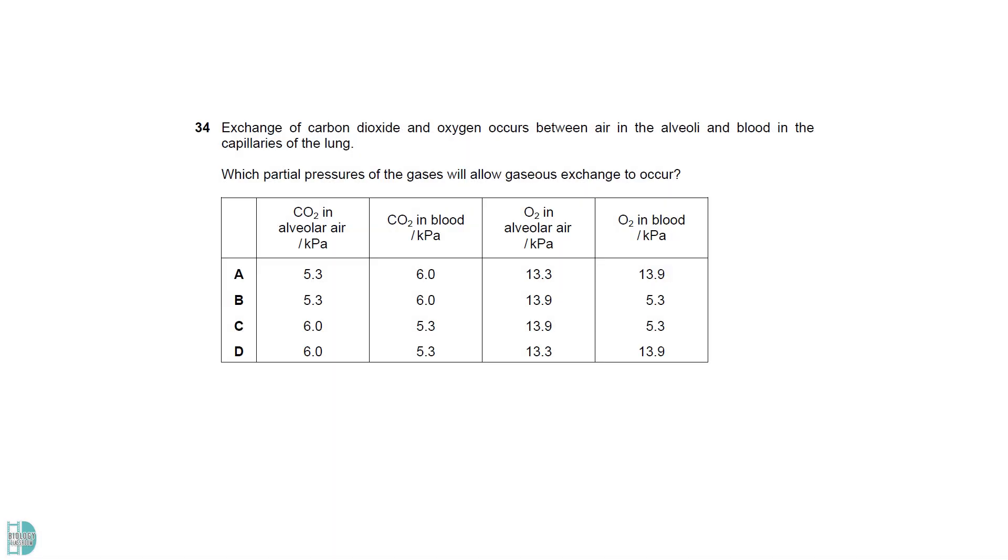Near the alveoli, the partial pressure of carbon dioxide is higher in the blood, leading to its diffusion from the blood into the alveolar space. It is the opposite for oxygen, so it diffuses down the partial pressure gradient from the alveolar space to the blood. B shows the correct gradient.